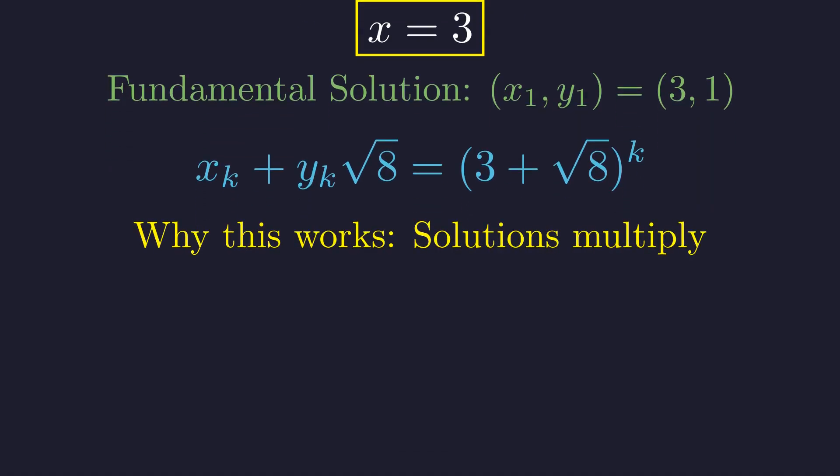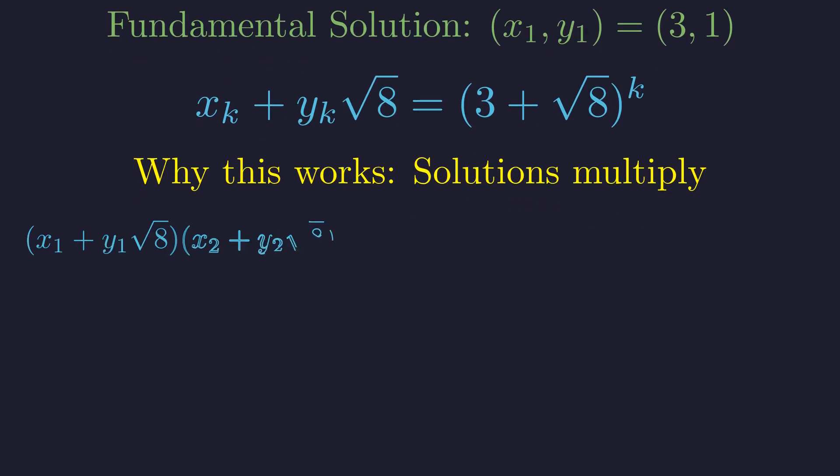This works because solutions to Pell's equation have a beautiful multiplicative structure, corresponding to units in a number field. If we have two solutions, their product gives another solution. This multiplicative closure means that powers of the fundamental unit generate all positive solutions.